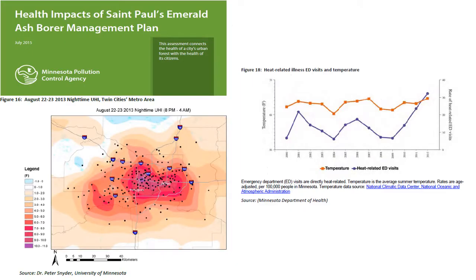A report by the Minnesota Pollution Agency found that in the Twin Cities there's about a 2 to 5 degree difference between urban and surrounding areas, and in the evening there can be as high as a 22 degree difference. The figure on the left illustrates the nighttime difference in temperature between Minneapolis and St. Paul compared to the surrounding suburbs. This urban heat island can cause problems related to human health. The graph on the right shows the relationship between temperature and heat-related emergency department visits, and recently there seems to be an increase in heat-related emergency department visits.